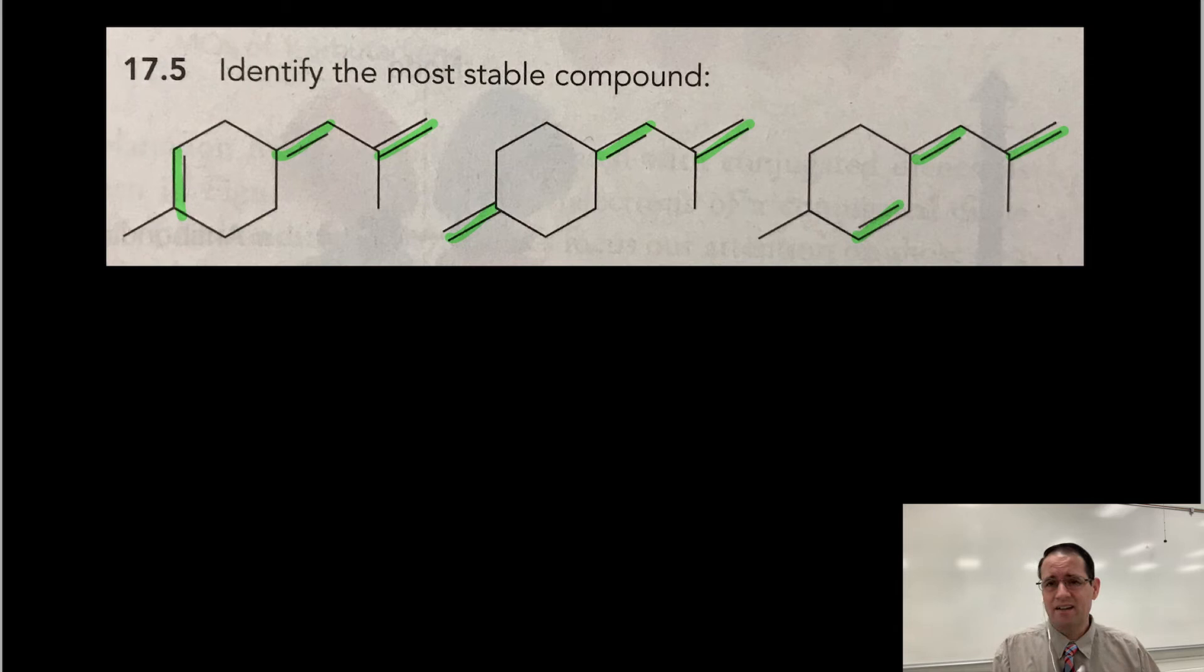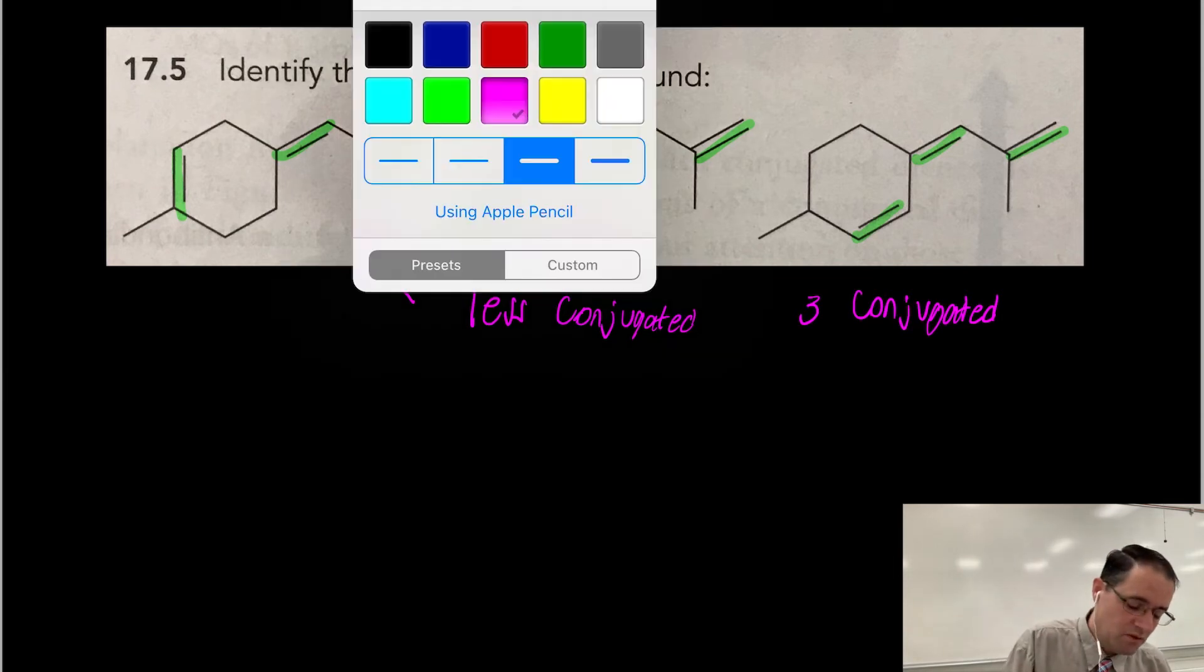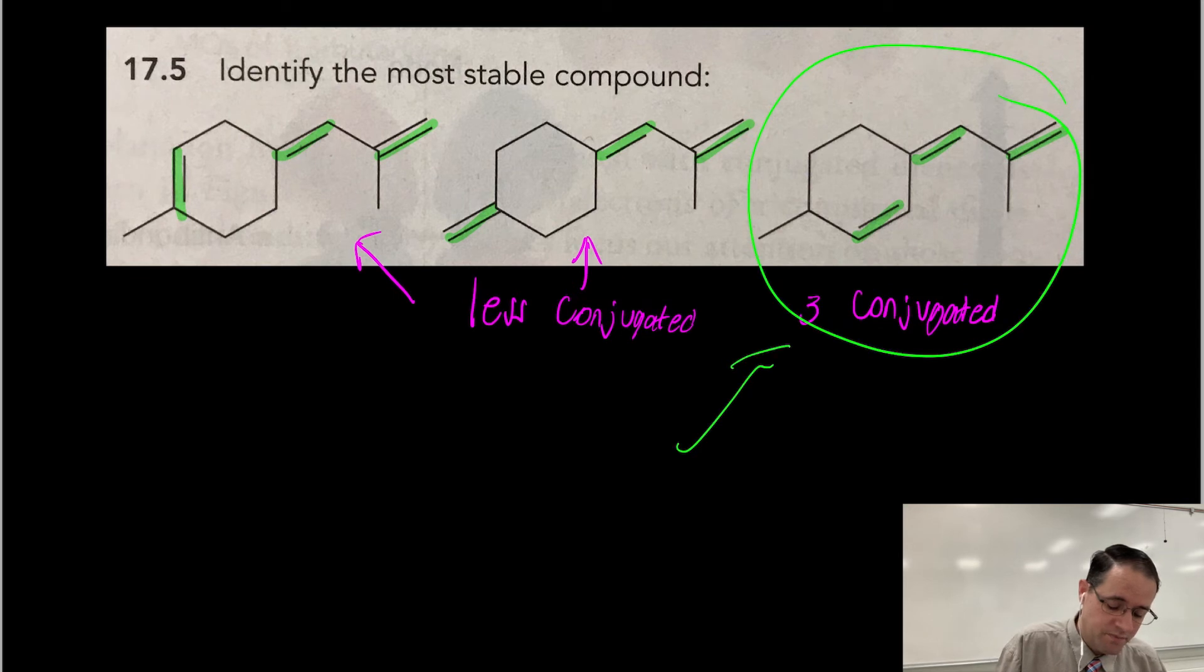And here we want to first analyze if you have any conjugated systems. So all three of these pi bonds are conjugated in the molecule on the right. And the very first compound and the middle compound only have two conjugated. So they're slightly less conjugated. This one in the middle is less conjugated. This one on the left is less conjugated. So remember, more conjugated means more stable. So we want to identify this molecule here as being the most stable compound. The most stable is going to have the more conjugation. That's pretty much all you need to know about the stability of conjugated dienes.